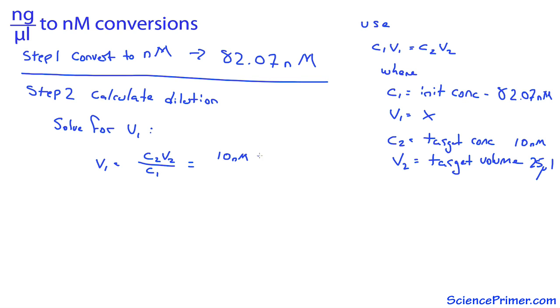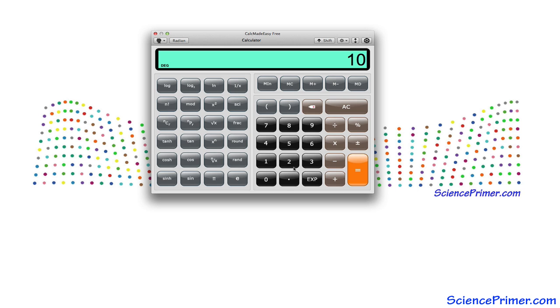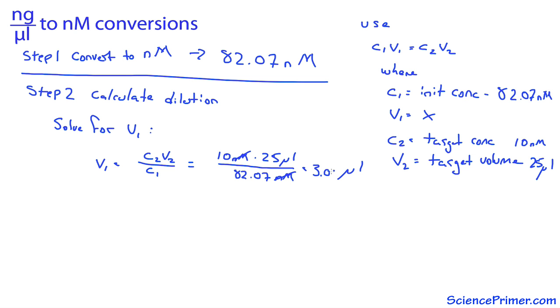Plugging in the numbers, 10 nanomolar times 25 microliters divided by 82.07 nanomolar. Set up this way, the nanomolar units cancel and the resulting unit is microliters. Doing the math, 10 times 25 divided by 82.07 equals 3.05.